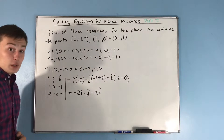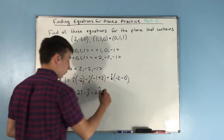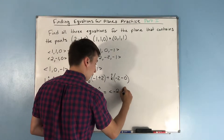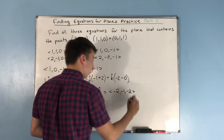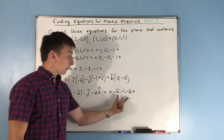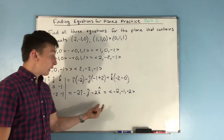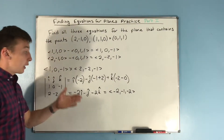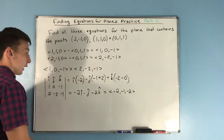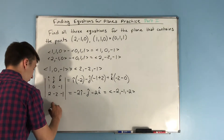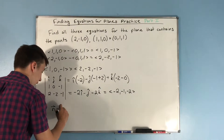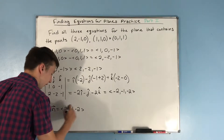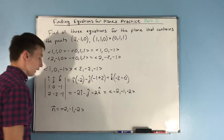So the cross product gives us the vector (-2, -1, -2). That is a vector orthogonal to the plane — our normal vector. So n = (-2, -1, -2).